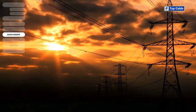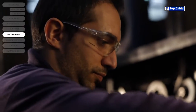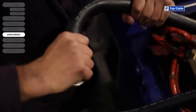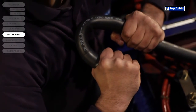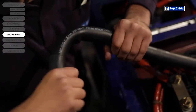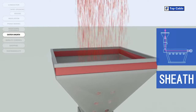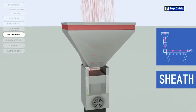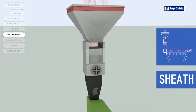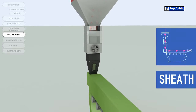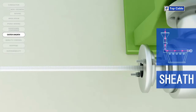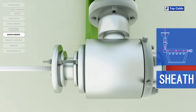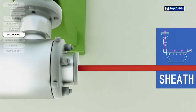The sheath also protects cables from mechanical aggression which may occur during the installation of the cable. As with the insulation, the outer sheath can be made from a thermoplastic or a thermosetting plastic. The outer sheath is applied like the insulation via a process of extrusion at high temperature. The sheath may be made from different materials depending on the required protection level, the final flexibility of the cable, the work environment, etc.